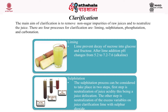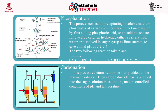In liming, calcium hydroxide is added to adjust pH to 7. Lime prevents decay of sucrose into glucose and fructose. After lime addition, pH changes from 5.2 to between 7.2 and 7.6, and substances originally present in colloidal form precipitate.